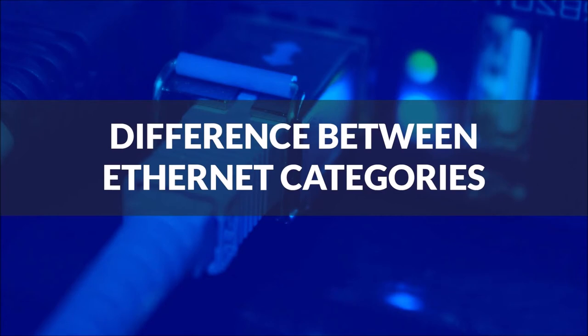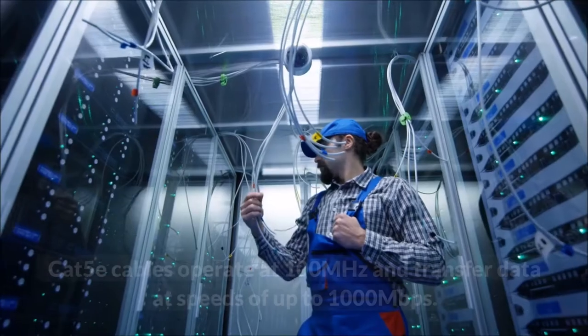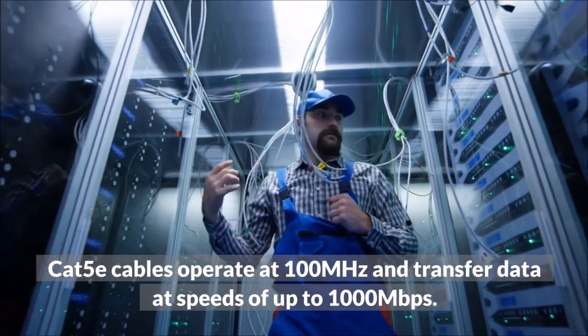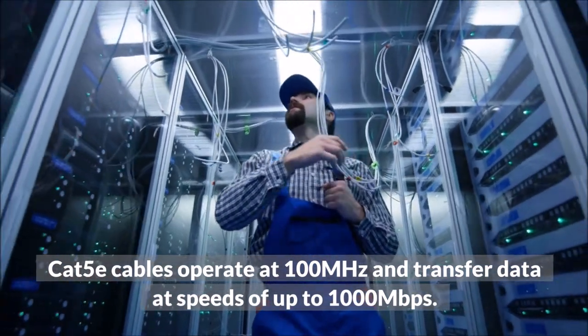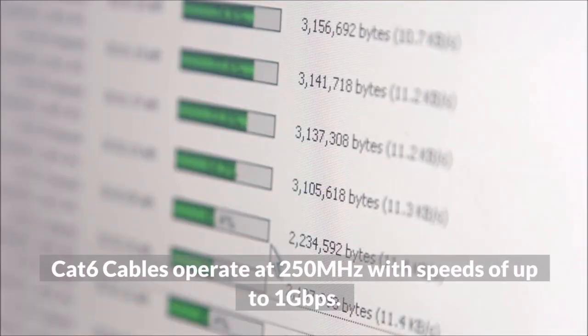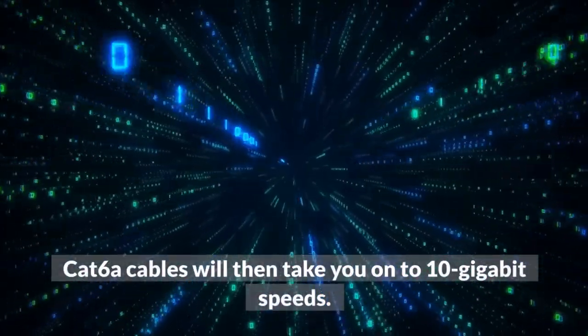Difference between Ethernet categories. CAT-5E and CAT-6 cables. CAT-5E cables operate at 100 MHz and transfer data speeds of up to 1000 Mbps. CAT-6 cables operate at 250 MHz with speeds of up to 1 Gbps. CAT-6A cables will then take you on to 10 Gbps.